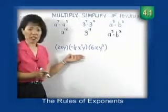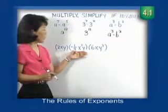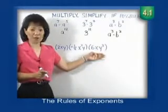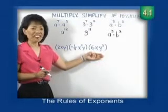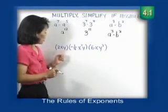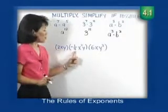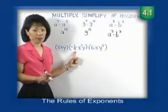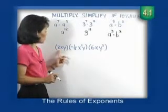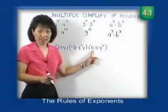Let's move on to a more complex problem. We have 2xy times negative one-fourth x squared y times 6xy to the third power. Don't feel overwhelmed — we're going to take it step by step. The first part is to multiply the numbers together. We have 2 times one-fourth, which is two-fourths or one-half, times 6, which is 3.